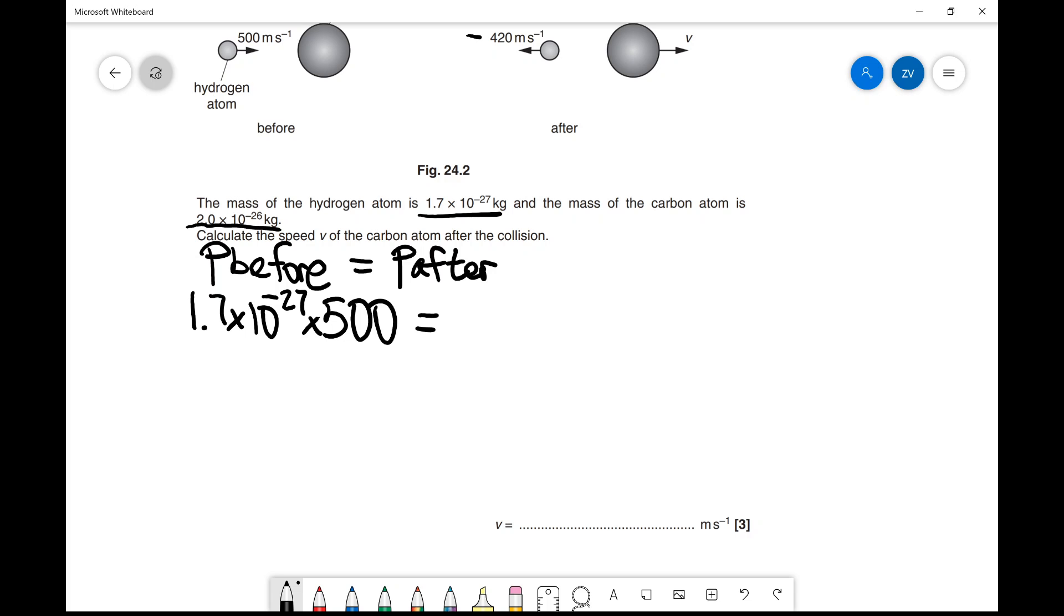The momentum for the hydrogen atom after collision is its mass times -420. Notice on the left I have +500 for the speed; here I've got -420.